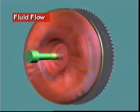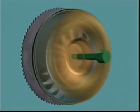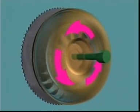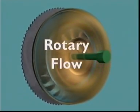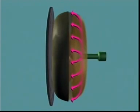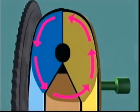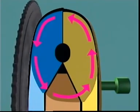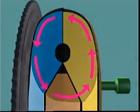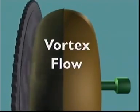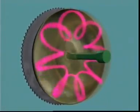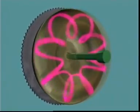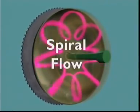The revolving impeller carries the fluid with it inside the converter casing. The fluid is rotating around the axis of the converter. This is known as the rotary flow. At the same time, centrifugal force moves the fluid outwards, away from the converter axis. During torque multiplication, the shape of the converter case makes the fluid flow in a circular motion through the impeller, turbine and stator. This is known as the vortex flow. Combining these two fluid flows produces a progressive circular or spiraling motion. This is known as the spiral flow.